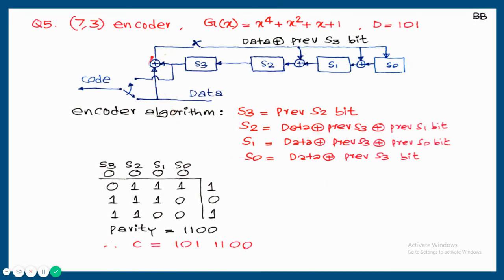Question 5: a 7,3 encoder with G(x) = x⁴ + x² + x + 1. Now the number of parity bits is 4, so 4 shift registers are needed: S0, S1, S2, S3. All connections are exactly the same as the previous four cases, except the two connections that depend on the generator polynomial.